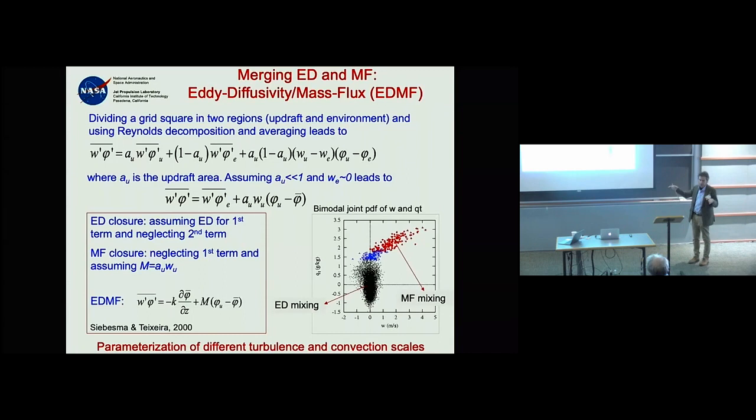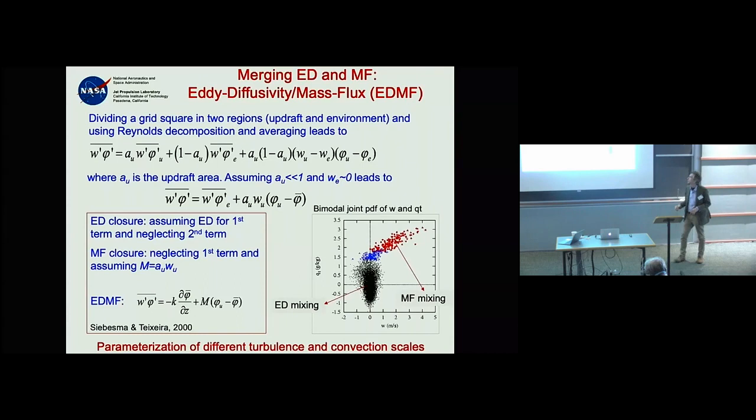If you divide the grid box into an updraft region (with area fraction a_u) and the environment, and further simplify by assuming the updraft area is small, the subgrid-scale flux becomes two terms: the environmental turbulence and the mass flux.